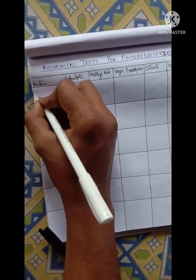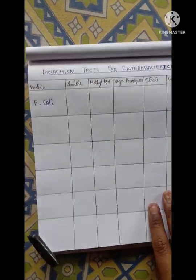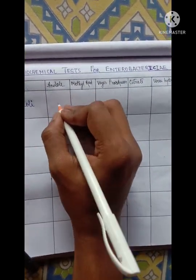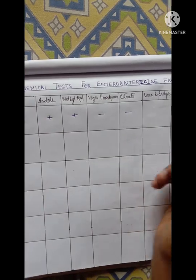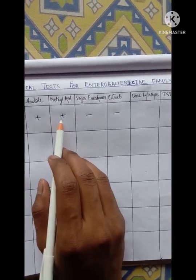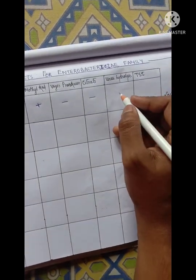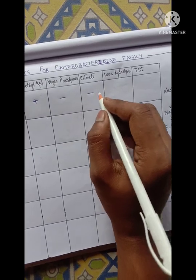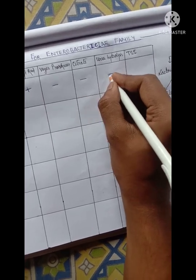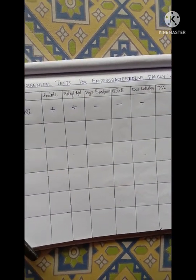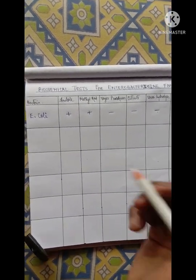The first bacteria is E. coli. For E. coli, fill it up like this: Indole positive, Methyl Red positive, Voges-Proskauer negative, Citrate negative. And for Urease, it will be the same as Citrate for E. coli and Klebsiella — the urea hydrolysis will be the same as that of Citrate. So it will again be negative.